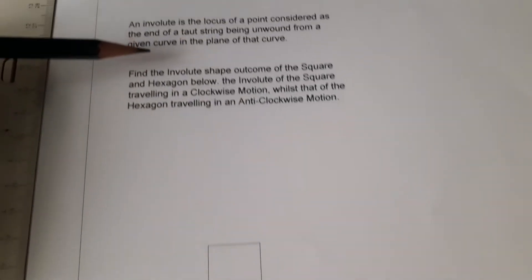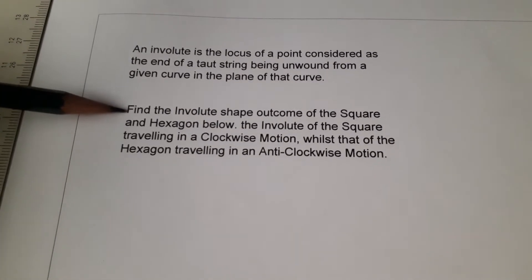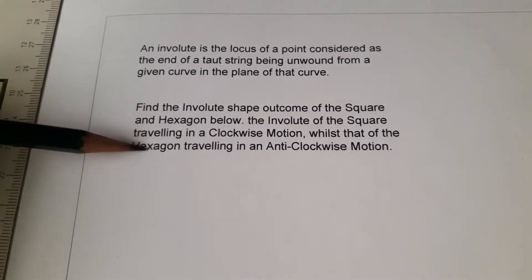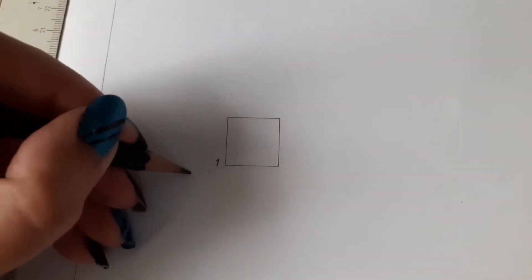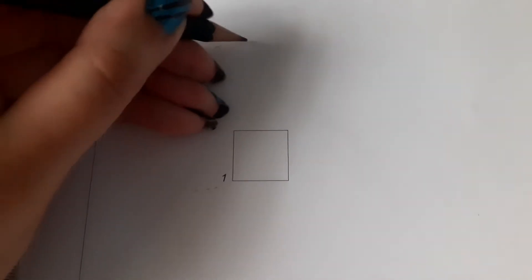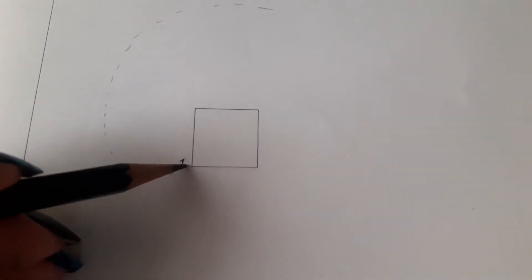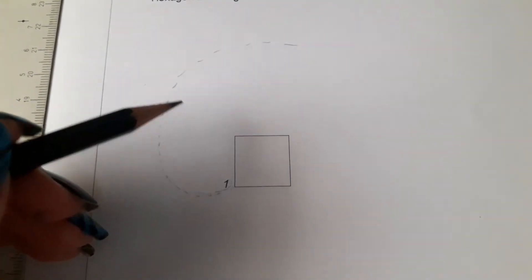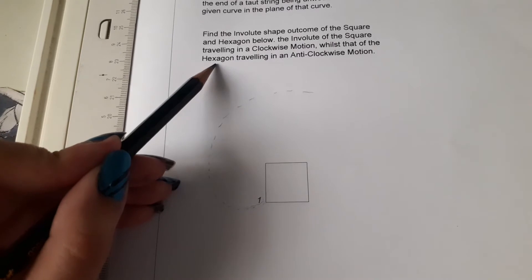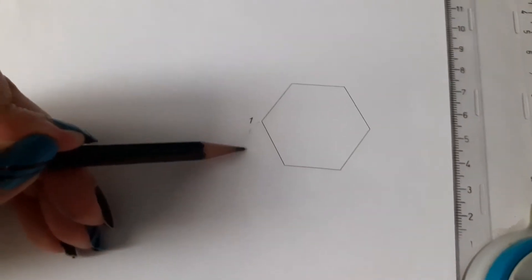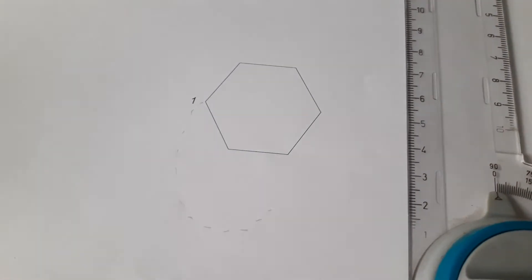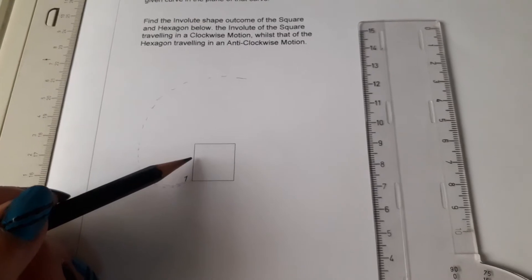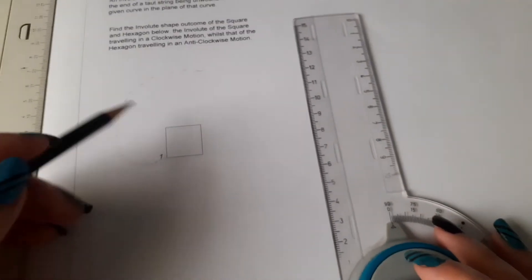Find the involute of the square and hexagon. The involute of the square travels in a clockwise motion — the string unwinds in a clockwise direction. For the hexagon it would be an anti-clockwise motion, unwinding the other way around.